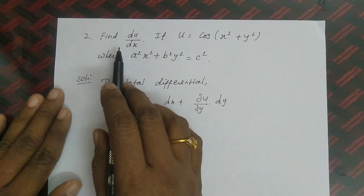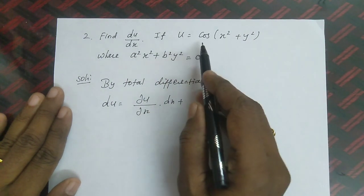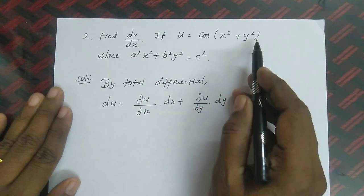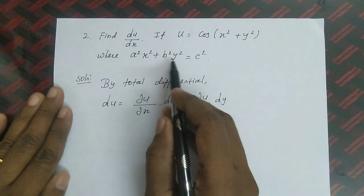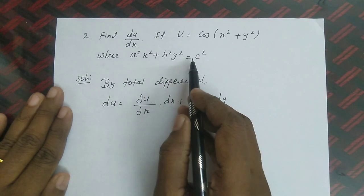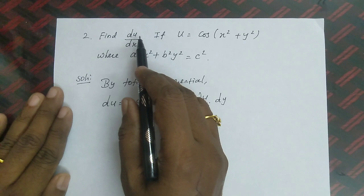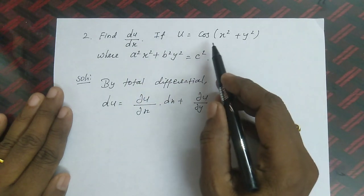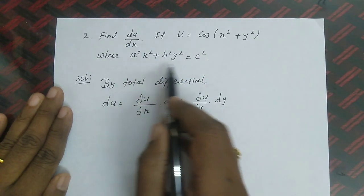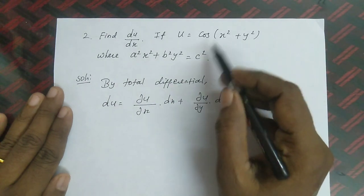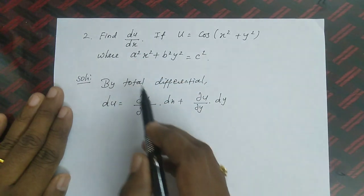Next question: Find du/dx if u = cos(x² + y²), where a²x² + b²y² = c². Here we need to find du/dx given both the expression for u and a constraint relation.